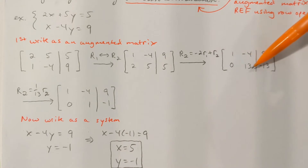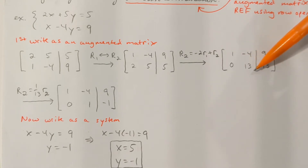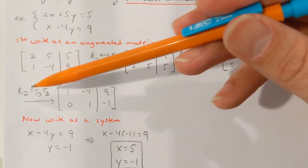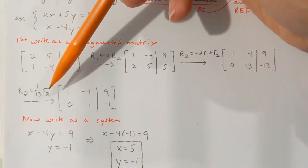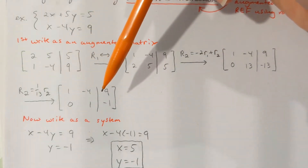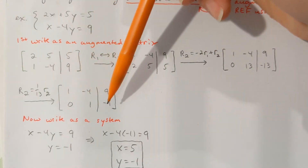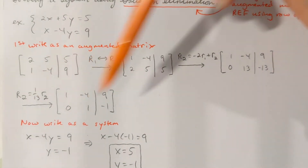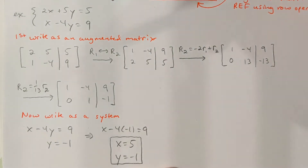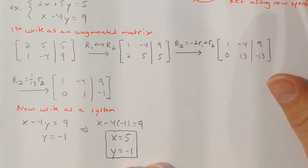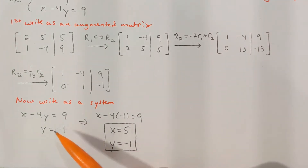Column 1 is now set. The next thing I need to do is change this 13 so that it's a 1 — I'm trying to get 1s down the diagonal. I'll need to get a new row 2. To make this 13 become a 1, I can multiply all the numbers in row 2 by 1/13. Row 1 stays as is. For row 2: 0 times anything is 0, 13 times 1/13 is 1, and negative 13 times 1/13 is negative 1. Now I'm in row echelon form — I've got 1s down the diagonal and a 0 in the lower triangular part. Whenever you're in row echelon form and convert back to a system, you'll know one of the variables.